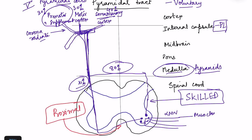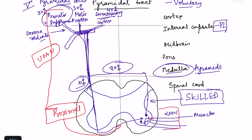When discussing the corticospinal tract we must address upper motor neurons and lower motor neurons. The neuron from the cortex down to the level of the spinal cord synapse is known as the upper motor neuron. The alpha motor neuron in the ventral horn of the spinal cord — which exits and supplies the muscles — is the lower motor neuron. Detailed videos on upper and lower motor neuron lesions are linked in the description.